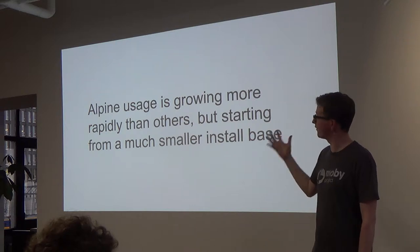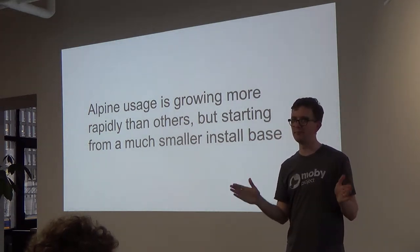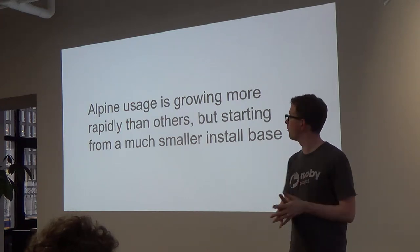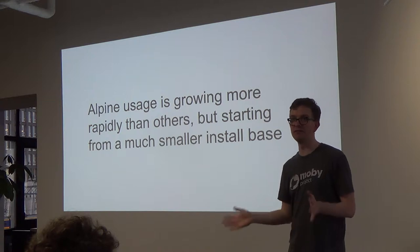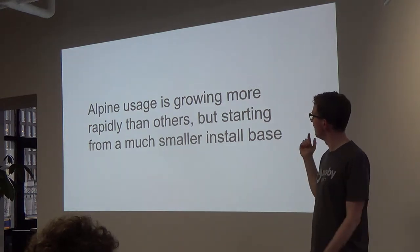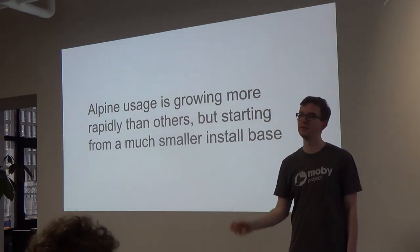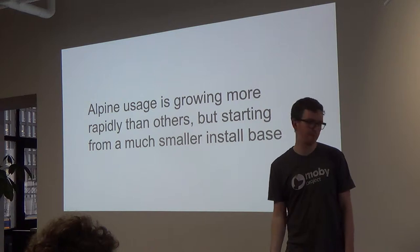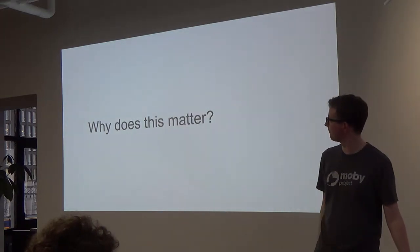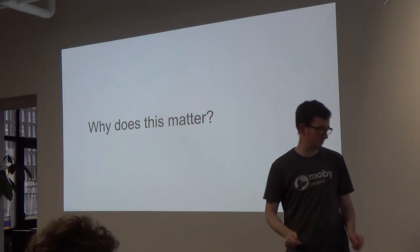Alpine usage and the small distros seem to have centered on Alpine, especially with Docker's official backing. Alpine is growing rapidly, but from a very small base — it's still very much short of the Debian derivatives. So at the moment, there are some numbers, some tables, some graphs. Why does this matter? Most people start with size — things are bigger. That sort of matters, but not that much.